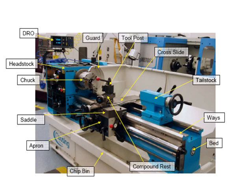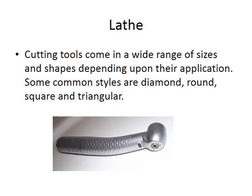This is an image of a lathe in action — a standard lathe that you'd see in a general tool room; it's a hand lathe. This is the chuck here where you mount your metal work piece, and this is the tool post where you fix your cutting tools. You move the tool post in and out of the work piece at the appropriate speeds and dimensions necessary. The cutting tools come in a wide range of sizes and shapes depending upon their application.